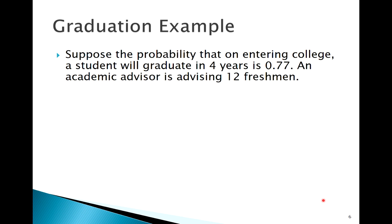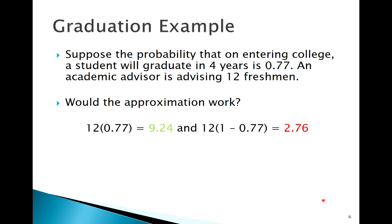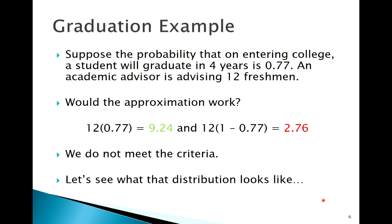So here's an example you may have seen before, the probability that if you follow somebody for four years, the probability they graduate is about 77%. So say you were an advisor, you had 12 freshmen that you were following for four years. So let's think about with these 12 freshmen and 0.77, would it work here? Well, we don't quite meet our criteria here for just 12 freshmen.